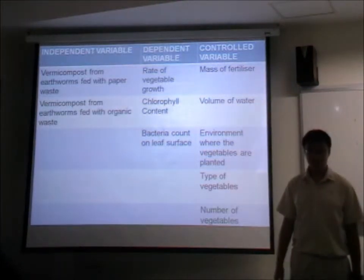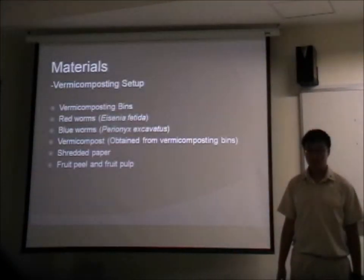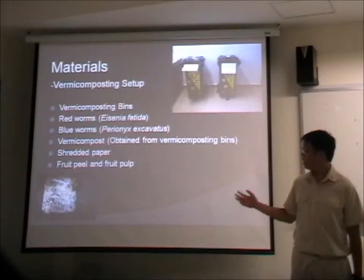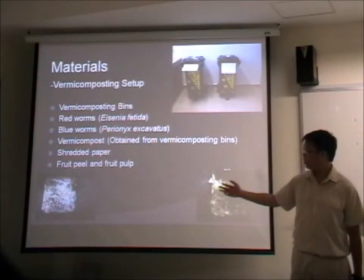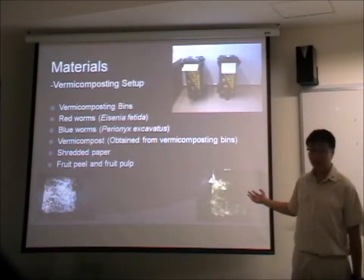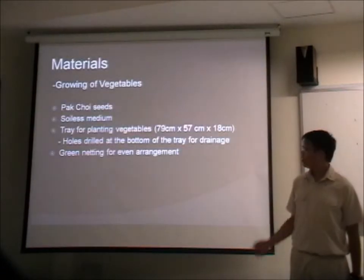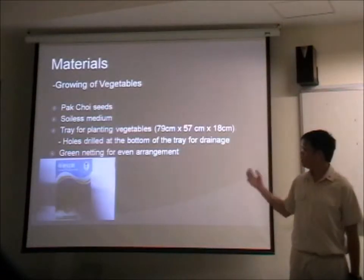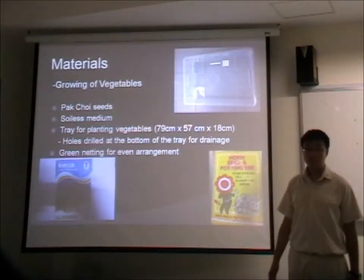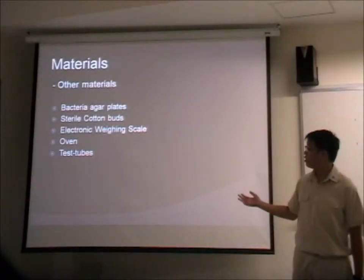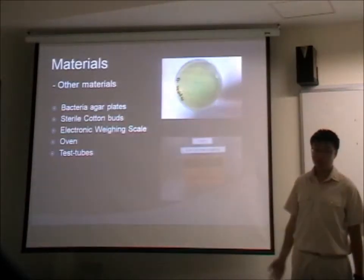Here are our variables as well as our materials. On the left you can see the paper waste setup, and on the right, the organic waste setup. Here are the materials we used to grow our vegetables, as well as other materials used in our project.